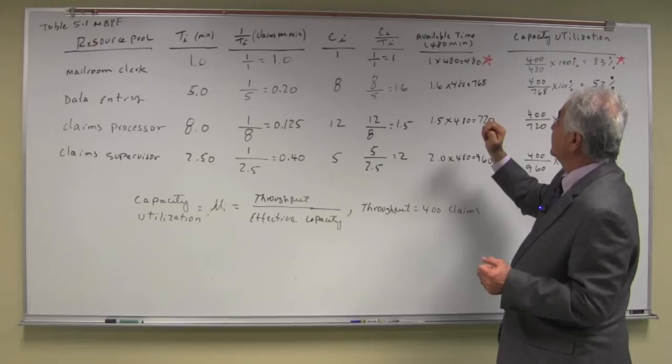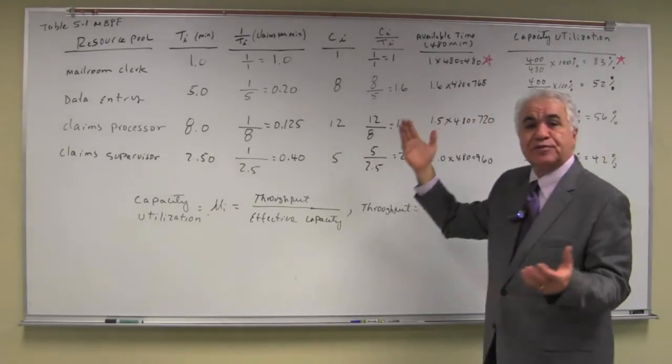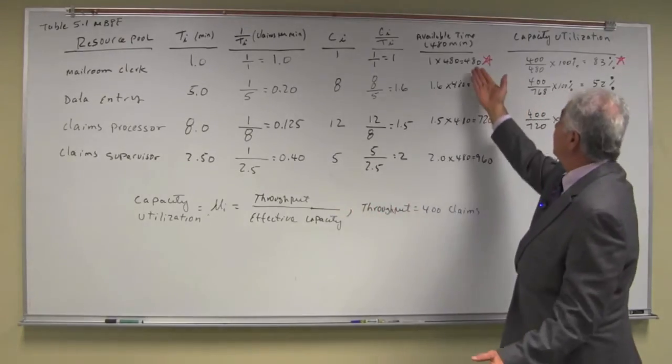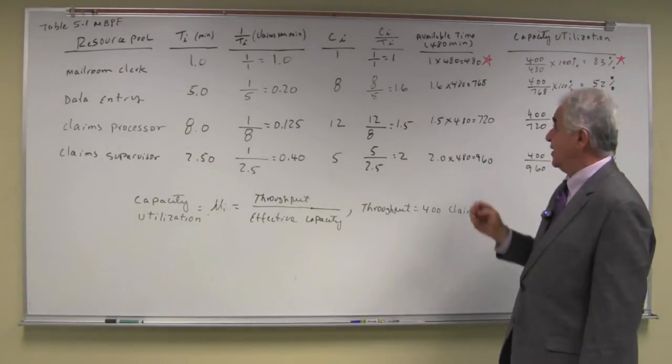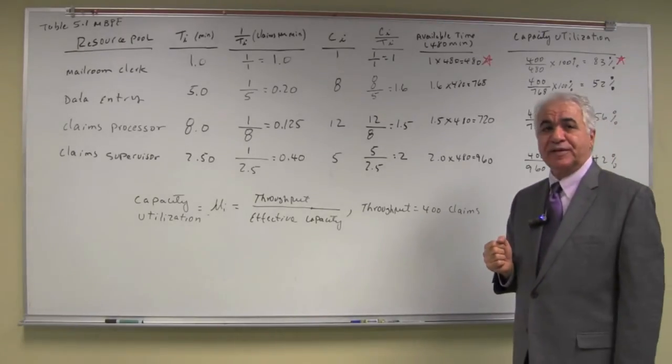So we have 480 claims. Let's assume 480 minutes represents one day. 480 claims per day, 760 claims per day, 720 claims per day, and 960 claims per day.